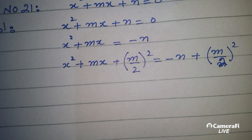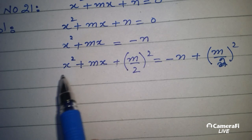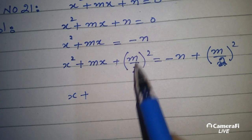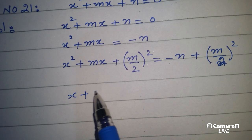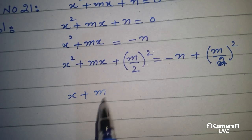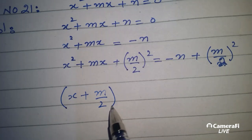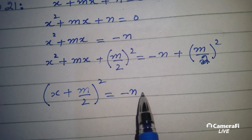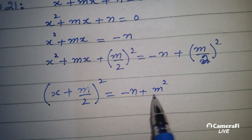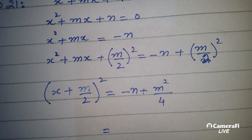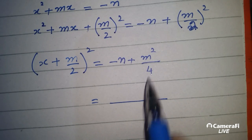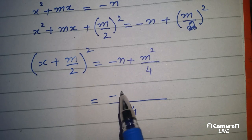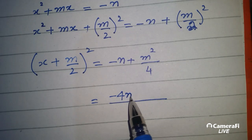Add m by 2 squared on both sides. اس کے بعد یہاں سے x اٹھاتے ہیں اور اس پہ whole square لگا دیتے ہیں، minus n plus m square۔ اس طرف 4 آگئے، اس کو minus n سے ضرب دیں گے، minus 4 plus m square۔